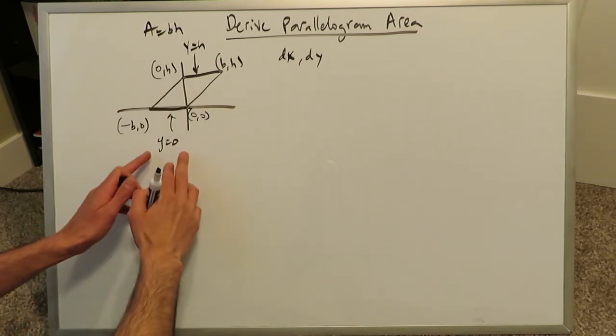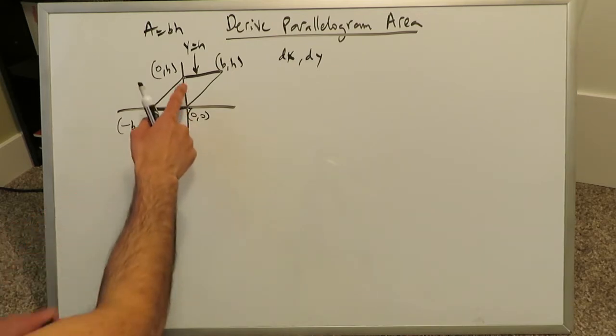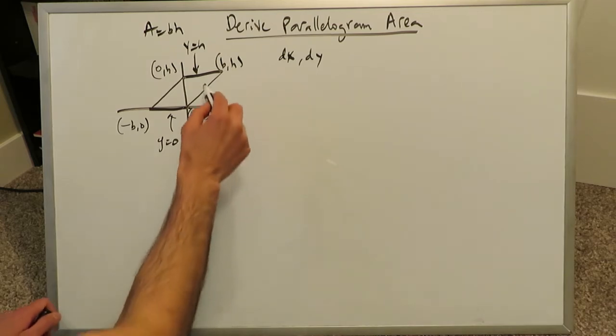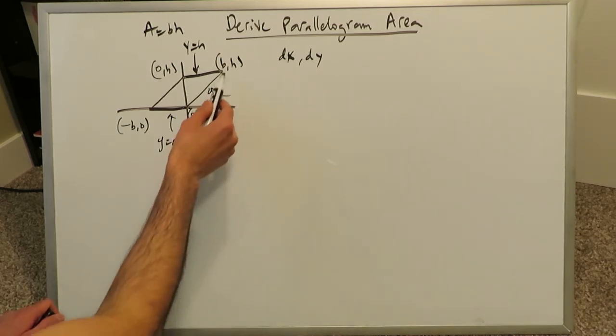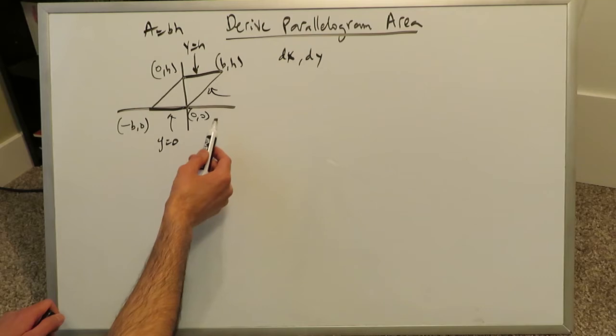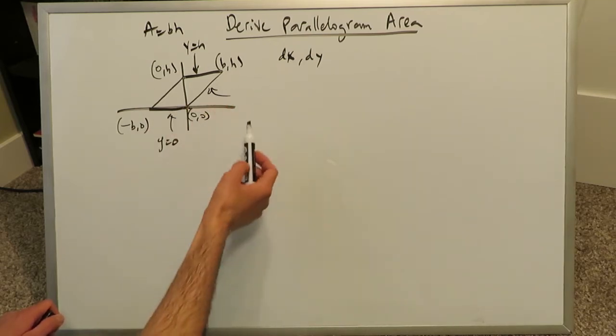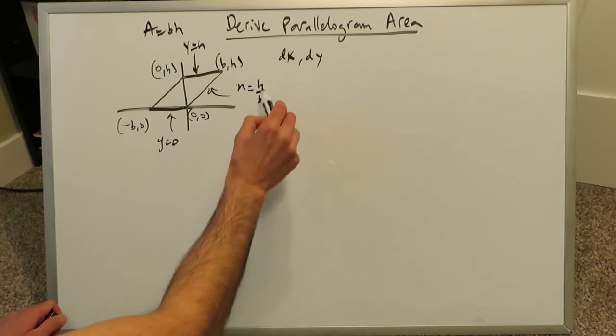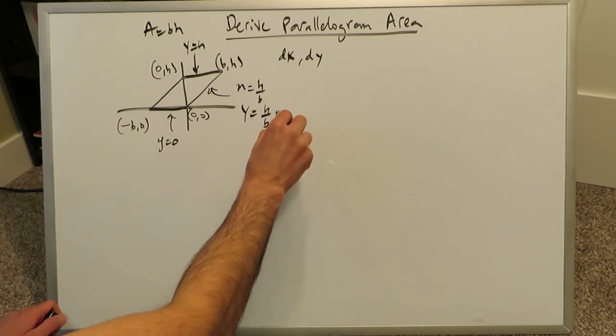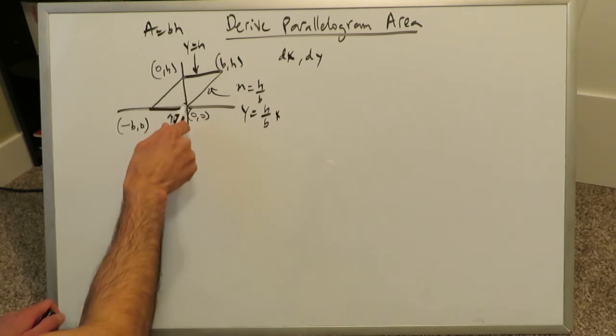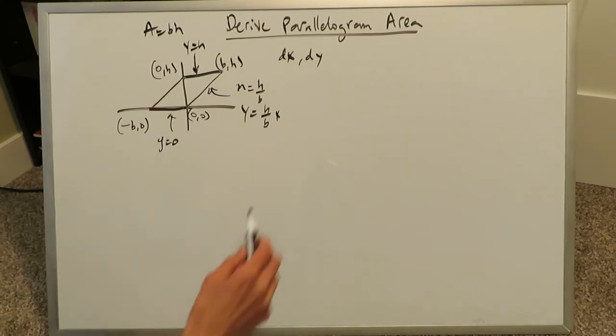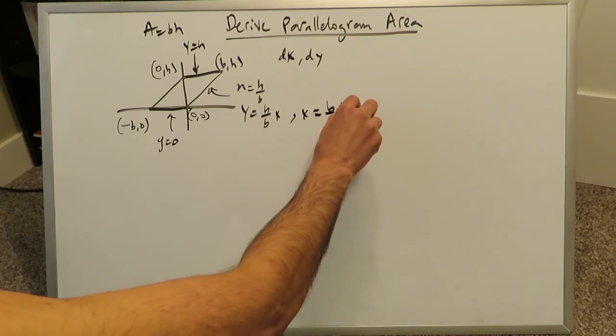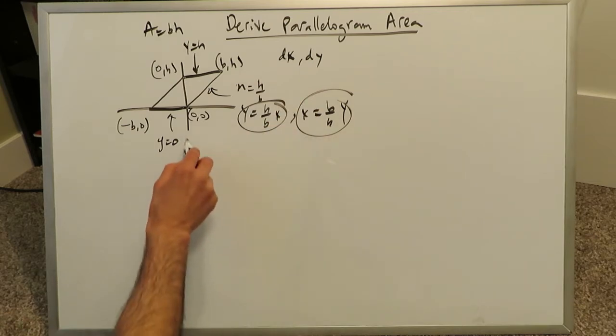But you know these lines here have a defined domain. This is from minus b to 0. This is from 0 to b. We must determine the equation of this line, which is a y equals mx plus b. But think about it. You have b, h, and 0, 0. You can do change in y over change in x. The slope formula, you'll get m is equal to here, h over b. The equation of this line will be h over bx. There's no y intercept other than this origin. y equals h over bx, or you can say in terms of x, it's b over h y.